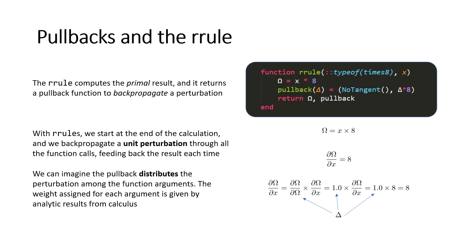Concretely, let's say we have a function times 8, which multiplies a number by 8. We know the derivative with respect to that number is just the constant 8. When we back-propagate through this function, we think about what the derivative with respect to x should be if we pass in a unit perturbation given by delta. The derivative is just the constant 8, and so to back-propagate, we just have to multiply our perturbation by 8 as well. The pullback is a function which takes in that perturbation and returns the perturbation times 8. If this function were present in some larger calculation, delta would be the total perturbation from other calculations rather than just 1.